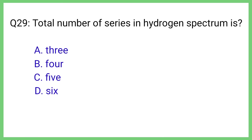Question No. 29. Total number of series in hydrogen spectrum is. The correct answer is Option C. Five.